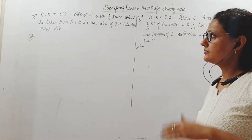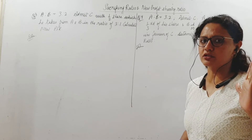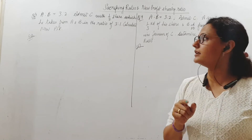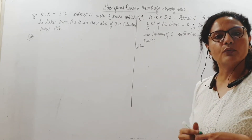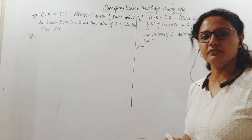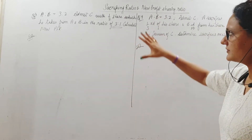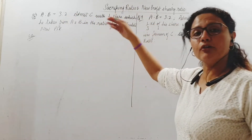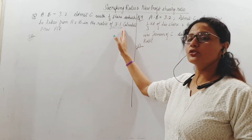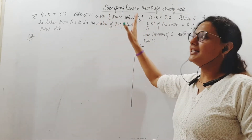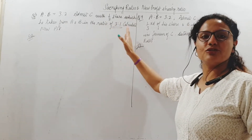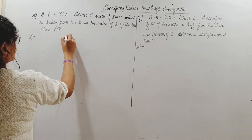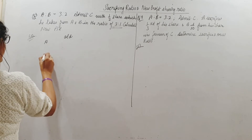Question 3: A is to B, old ratio is 3 is to 2. They admit C with half share, which he takes from A and B in the ratio of 3 is to 1. So the sacrificing ratio is 3 is to 1. A and B are giving away half of the profits to C, and they bear this half in the ratio of 3 is to 1.